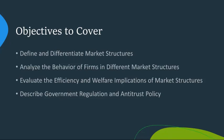Our fourth objective is understanding government regulation and antitrust policy. Governments intervene in markets to address inefficiencies and promote competition. This can include antitrust laws and regulations that restrict monopolistic practices. The impact of these regulations varies across market structures — in perfect competition, regulation is usually minimal, while in monopolies, governments often regulate prices and behavior to prevent abuse of market power. It's essential to consider both the benefits and drawbacks of government intervention, as it can have a significant influence on market outcomes.